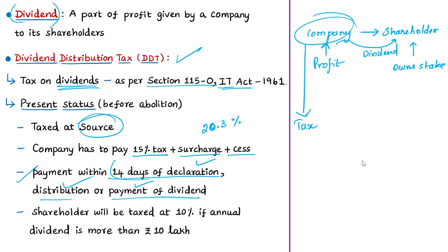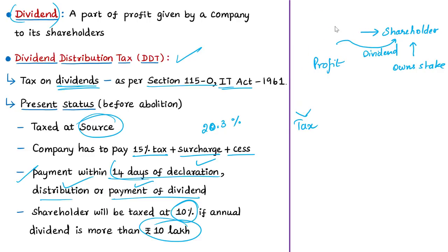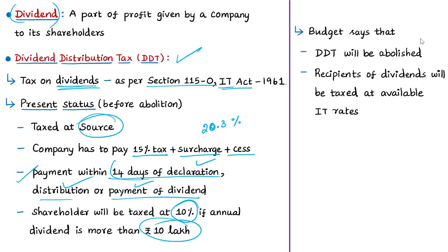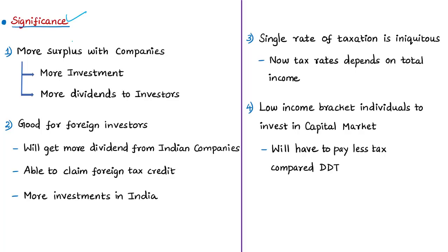Under the existing system, shareholders who receive dividends were free from paying DDT. However, if a shareholder receives Rs. 10 lakh or more in dividend income in a financial year, they pay an additional 10% tax. The finance minister has proposed abolishing DDT, after which dividends will be taxable in the hands of the recipients at applicable income tax slab rates.